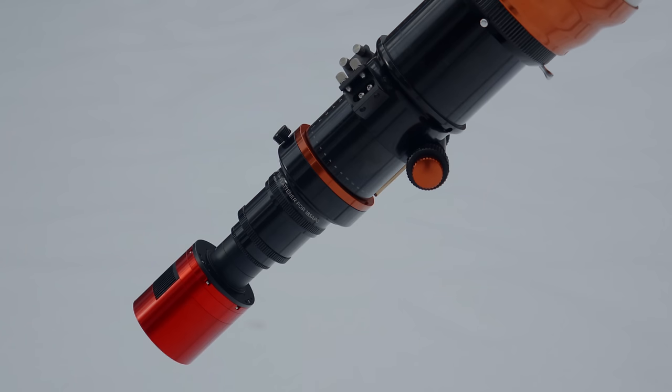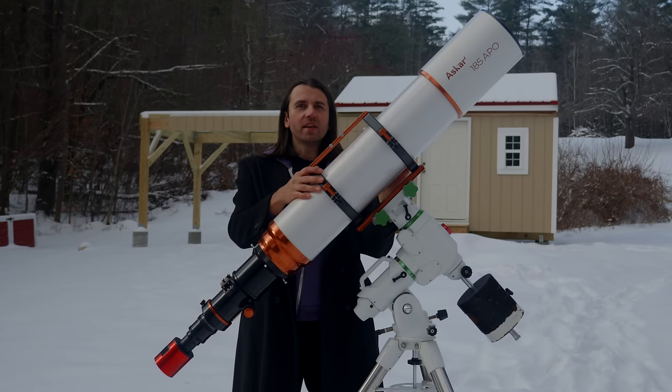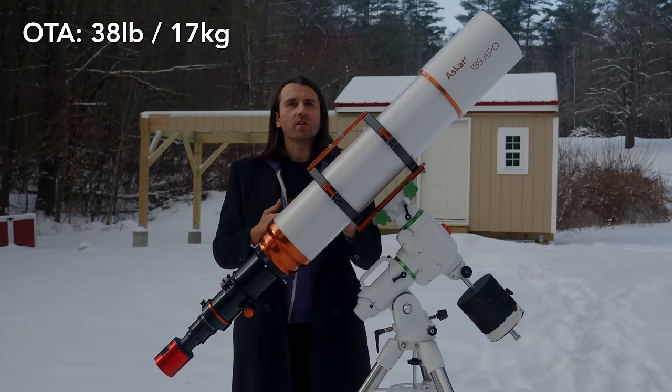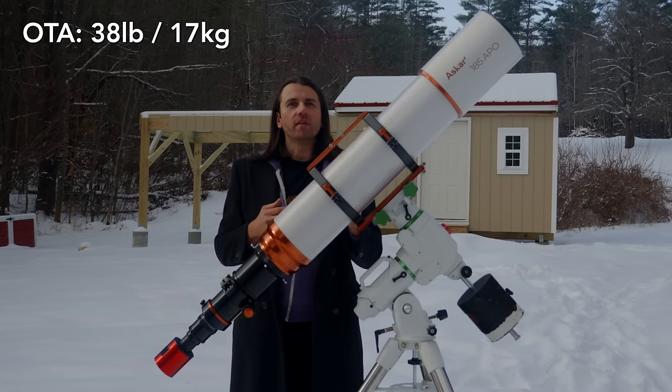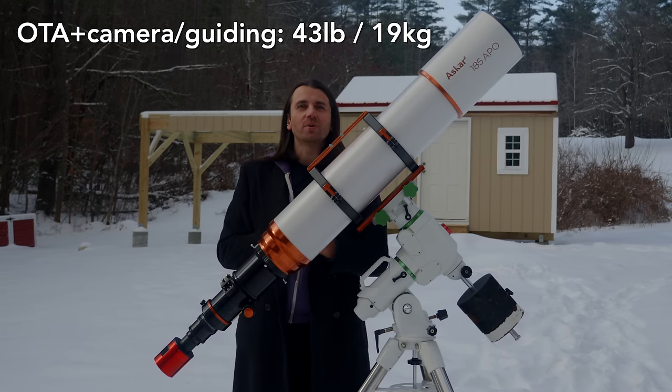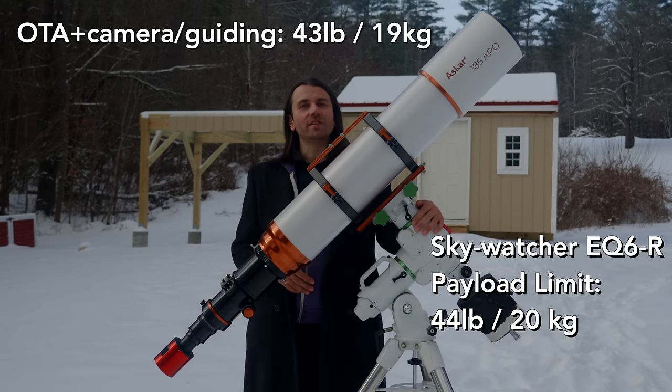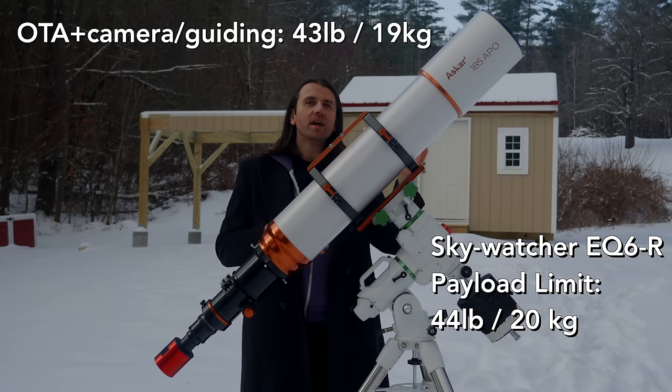The telescope itself with the rings and the dovetail weighs about 38 pounds or 17 kilograms. With a guide scope and flattener and astronomy camera attached it weighs 43 pounds or 19 kilograms. That's right on the edge of the payload limit for this Sky Watcher EQ6R mount that I did use for testing, which has a payload limit of 44 pounds.